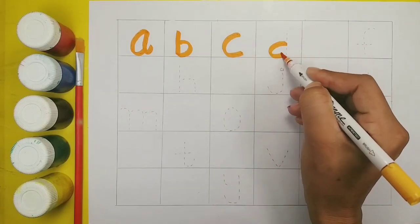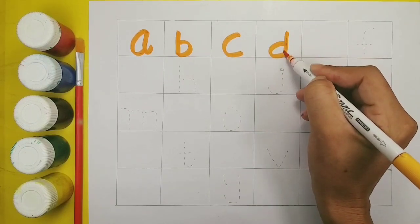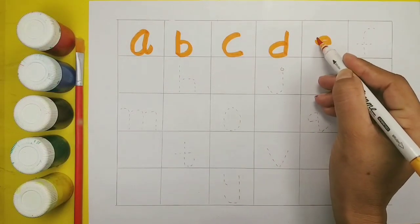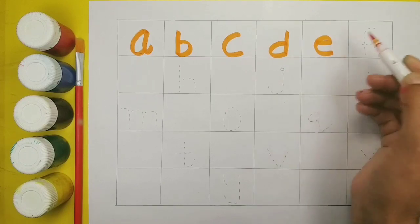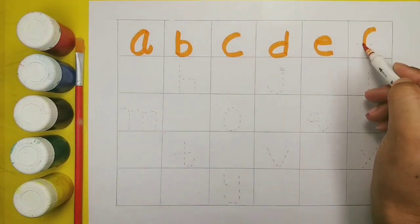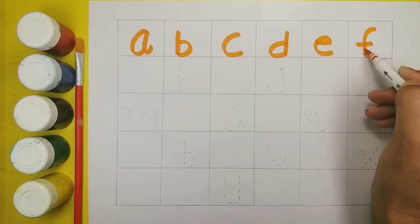D, D for duck. E, E for egg. F, F for fish.